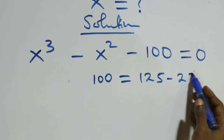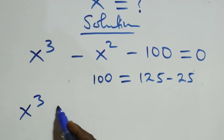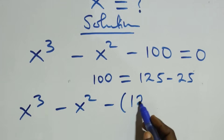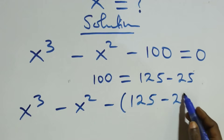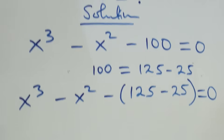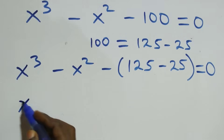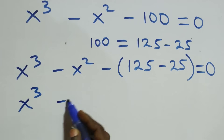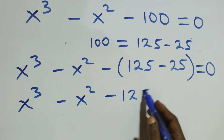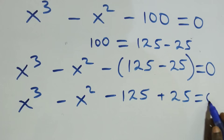From here we can write the constant as 125 minus 25, so what we have becomes x cubed minus x squared, then minus into bracket 125 minus 25, close bracket, equals to zero. Opening the bracket: x cubed minus x squared minus 125 plus 25 equals to zero.